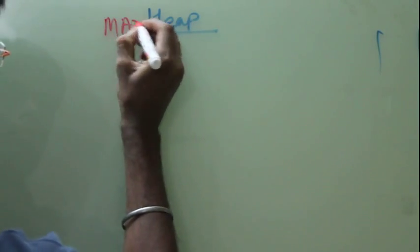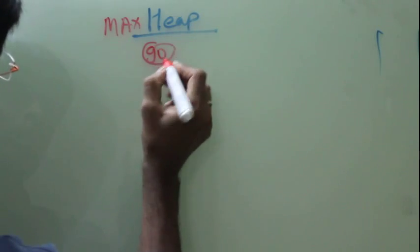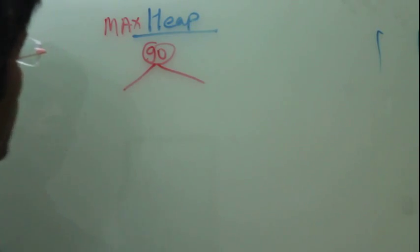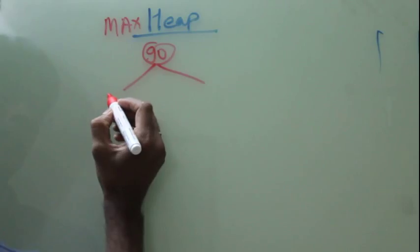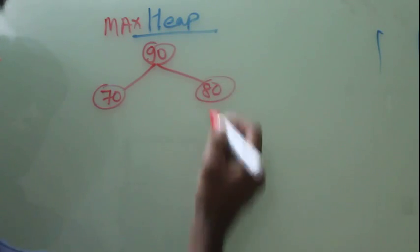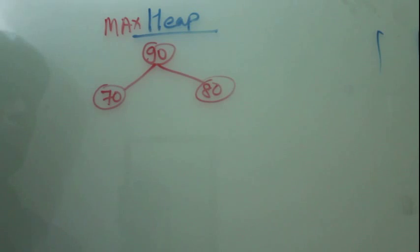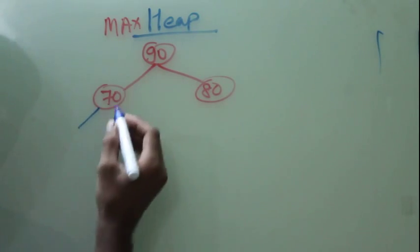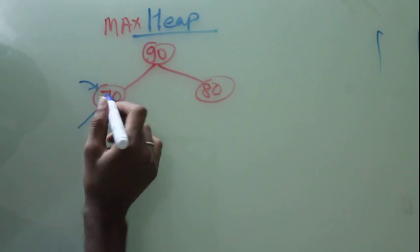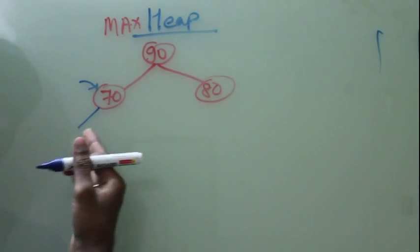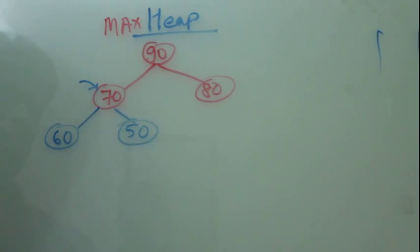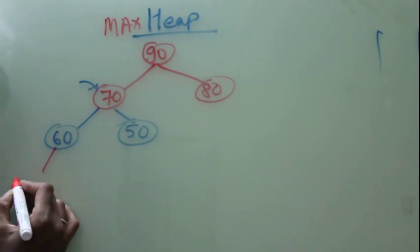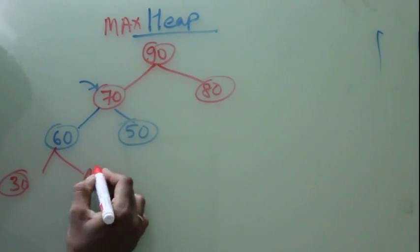So in a MAX HEAP, let's say I have a root node 90. By HEAP order property, the root node will always be greater than its left side and its right side. So if I take this root node, this will always be greater than its left and its right.